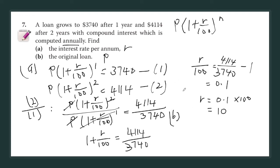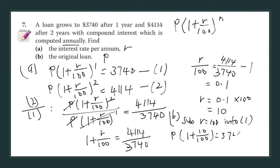Now for part b, we want to find the original loan P. Once we know r, we substitute back into equation one. Sub r = 10 into equation one: P times (1 + 10/100)^1 = 3740. So P equals 3740 divided by (1 + 10/100). Key that into your calculator and P equals $3,400 — that's your original loan.